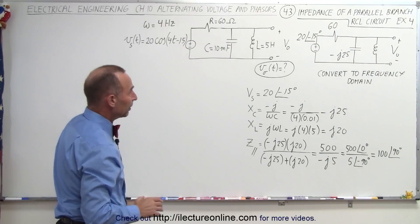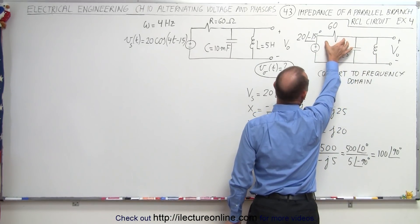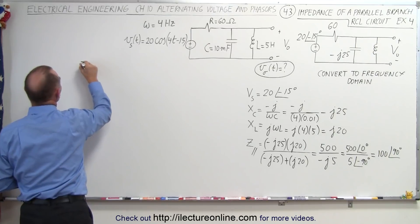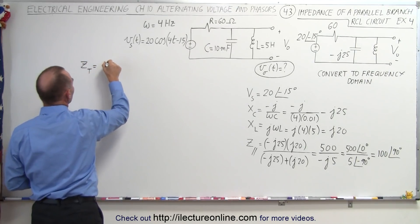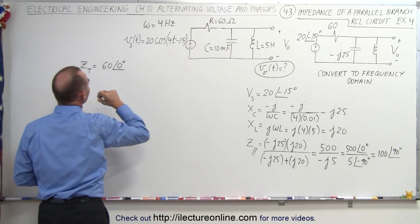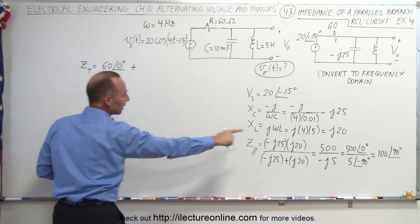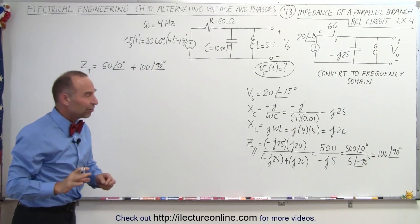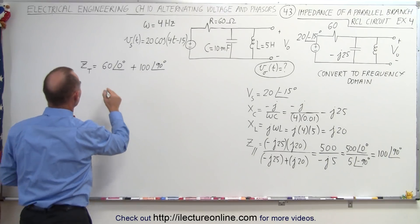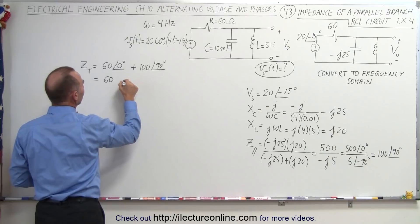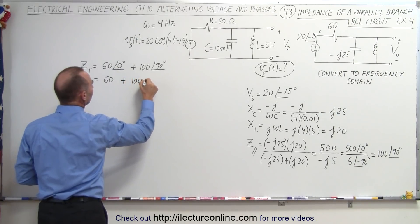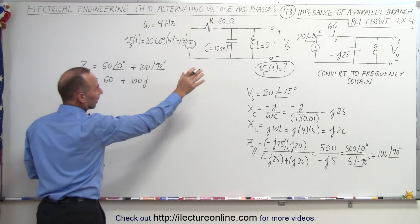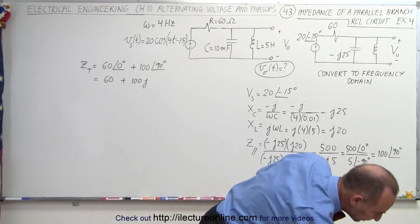Now the next step is to find the total impedance, combining the impedance of the resistor with the parallel impedance. Those are in series, so Z_total equals the impedance of the resistor, which is 60 at a phase angle of 0 degrees, added to the parallel impedance of 100 at a phase angle of 90 degrees. Converting, this equals 60 plus j100 — the real part from the resistor and the imaginary part from the inductor and capacitor in parallel.